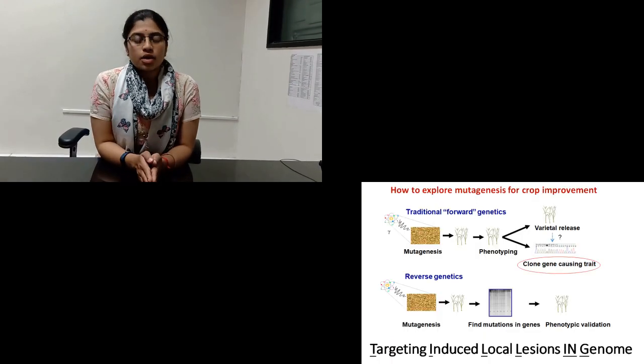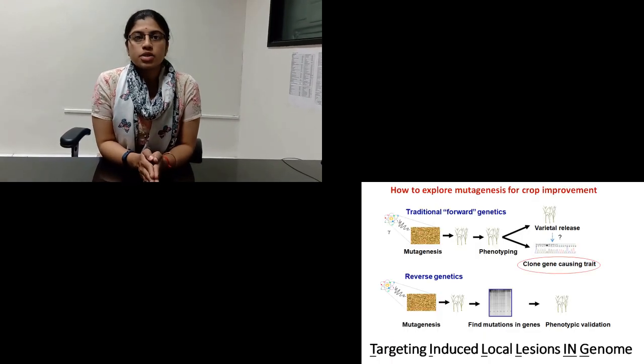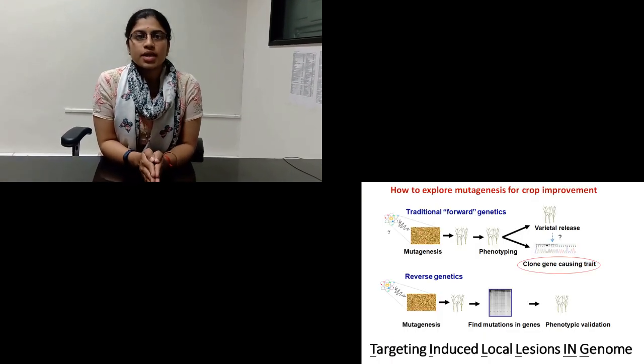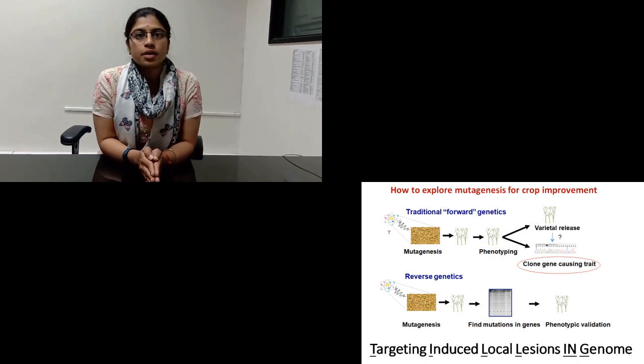This can be achieved by using alternative dwarfing genes with effect more restricted to stem elongation. At ARI, we are inducing mutations in the gibberellin biosynthesis pathway, and the detection is done by the TILLING protocol.